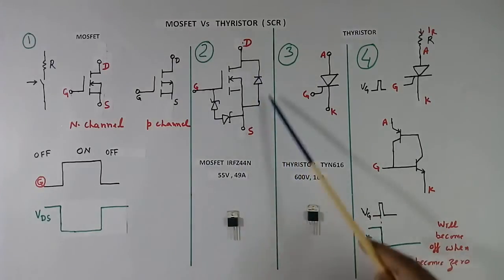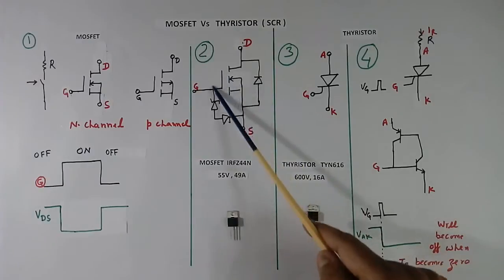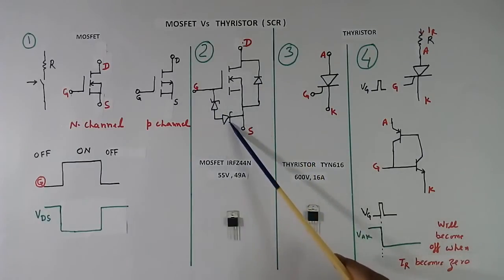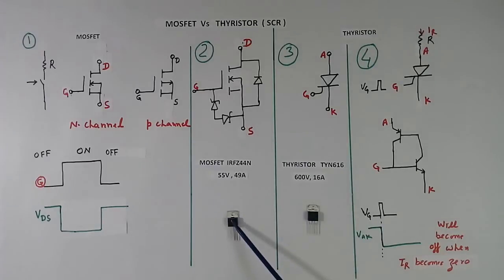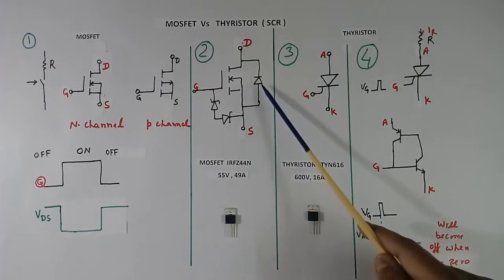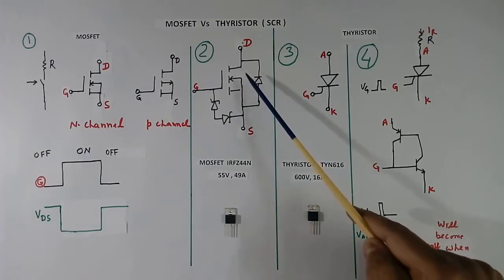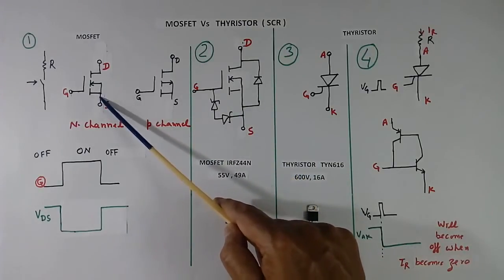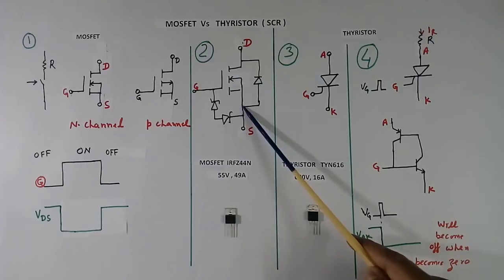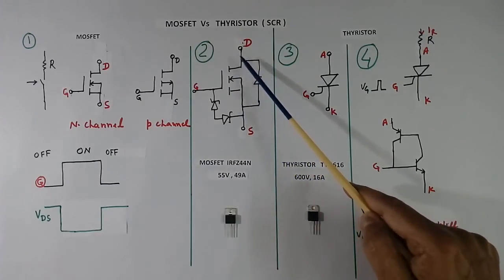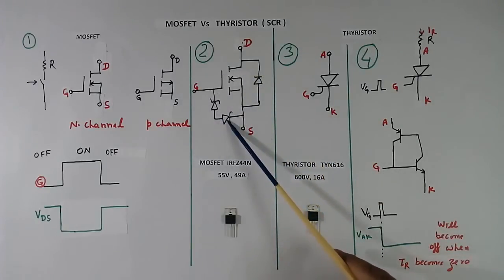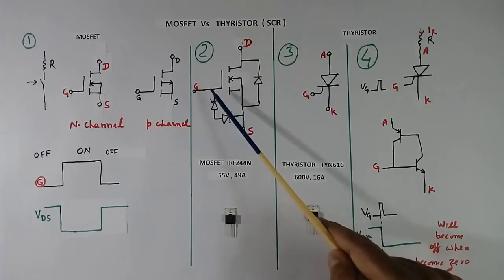This circuit is shown here. This is exactly like this, but this diode and 2 Zener diodes are extra — these 3 items are inside. This diode protects this MOSFET from reverse voltage. Suppose reverse voltage comes — this is positive, it is negative — so as soon as it becomes positive, this diode will conduct and it will protect this MOSFET. This Zener diode protects this MOSFET gate from ESD — electrostatic discharge.